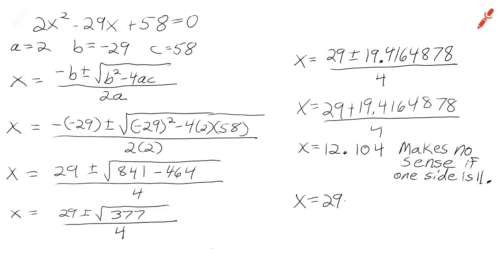And instead, we'll end up using the other one, the 29 minus 19.4164878 over 4. And what we discover with a trusty calculator is that the square we cut out of each corner is going to be 2.396 inches long. So we'll talk to you later.